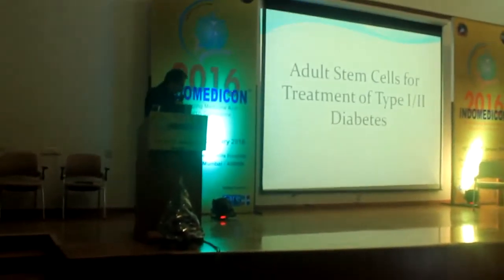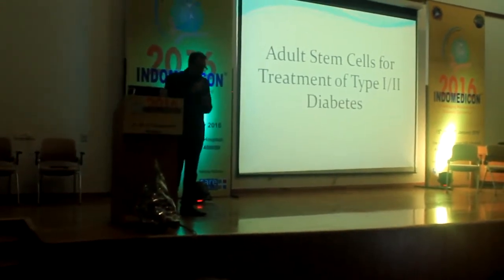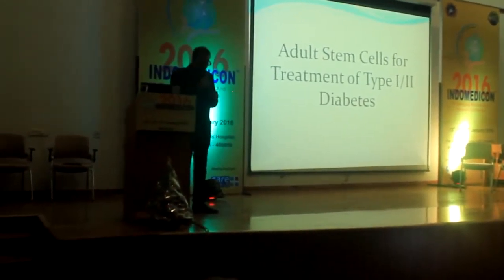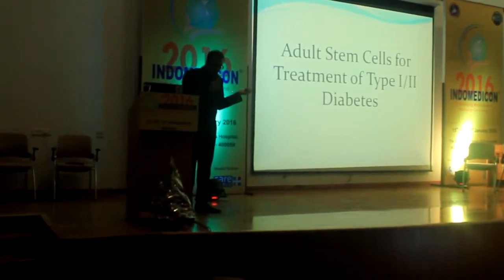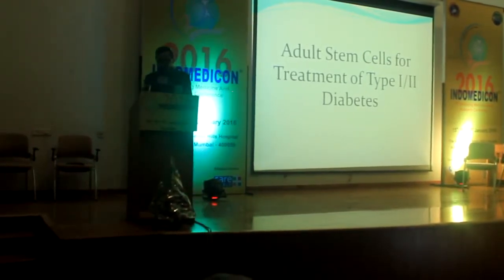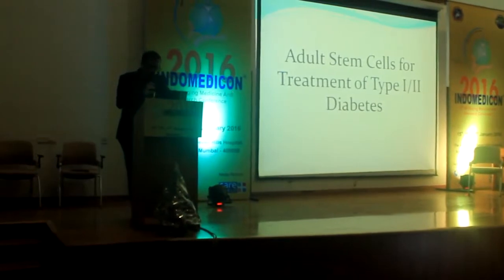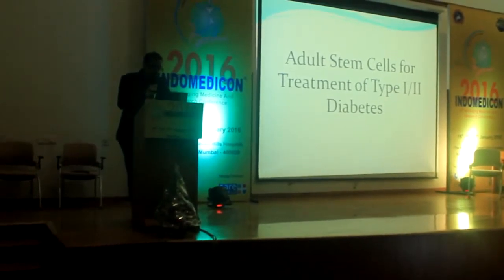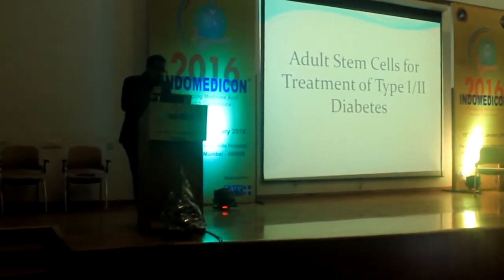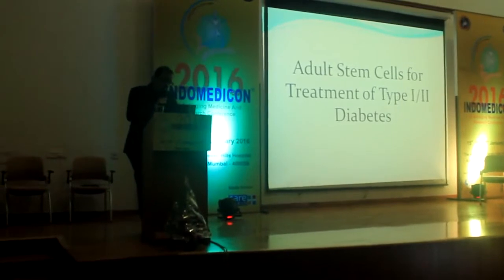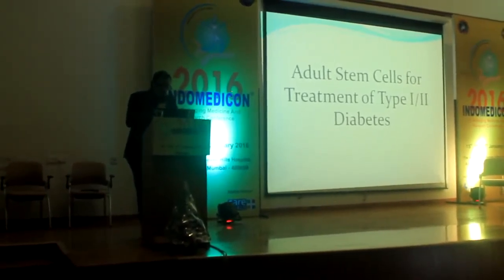In brief, adult stem cells — particularly mesenchymal stem cells coated on the instrument — but plain mesenchymal stem cells also play a major role in managing and controlling type 1 diabetes, because they have immunomodulatory properties. When administered directly into the circulation of the body, they also do the same job.